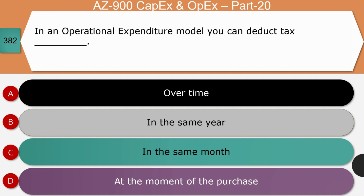Next question: In an operational expenditure model, you can deduct the tax — is it over time, in the same year, in the same month, or at the moment of purchase? The right answer is in the same year. Operating expenditure represents the daily expenses necessary to keep the business going. OpEx can be fully deducted in the same accounting period in which the items are purchased. Option B is the correct answer.